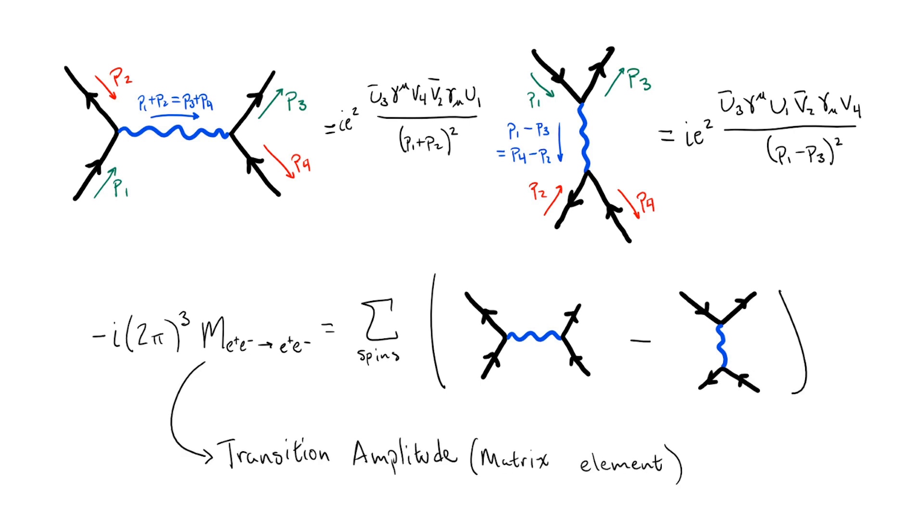Other common names that these transition amplitudes go by are the scattering matrix elements, S-matrix elements, or just matrix elements for short.